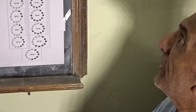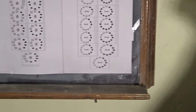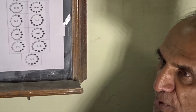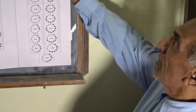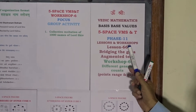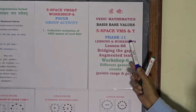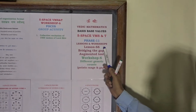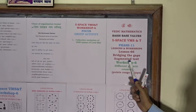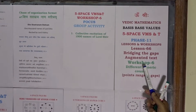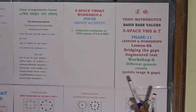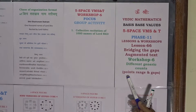Welcome to Vedic Mathematics Basis Base Values Classes. We are continuing with our initiation and exposure to the values and features of Fivespace VMSD. In Phase 11, we are at Lesson 66, the final lesson of this phase. The focus is going to be bridging the gaps as augmented text, and the workshop focus of Workshop 6 is upon the different generic counts of the points range and the gaps of the points range.